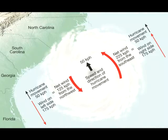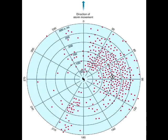As a hurricane makes landfall, the damage caused by wind depends on where the location is in relation to the center of the hurricane. At the right front quadrant, wind speeds of the rotation and the movement of the hurricane add up, making this the region with the highest wind speeds and the worst damage. Hurricanes making landfall can also spawn tornadoes, due to the high wind speeds in the upper atmosphere and friction slowing winds down at the surface, resulting in a strong wind shear.